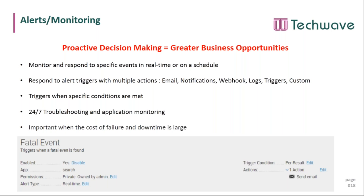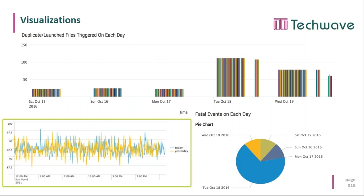You can run alerts in real time, 24/7, for troubleshooting and application monitoring — finding bugs and errors as they happen and monitoring application efficiency. This becomes critical when the cost of failure and downtime is large. Amazon being down for an hour can result in billions of revenue lost, so you want to get to the root cause as fast and efficiently as possible. That's where alerts become very important.